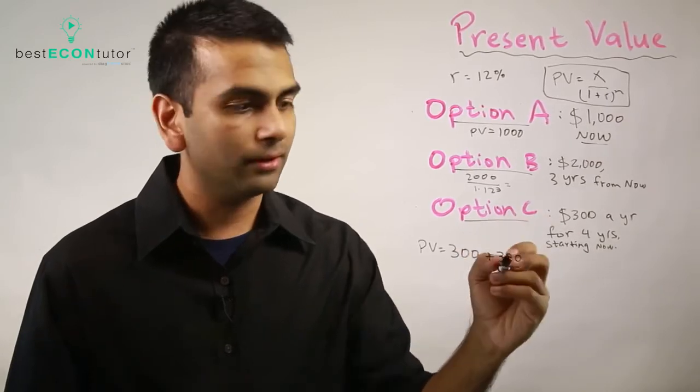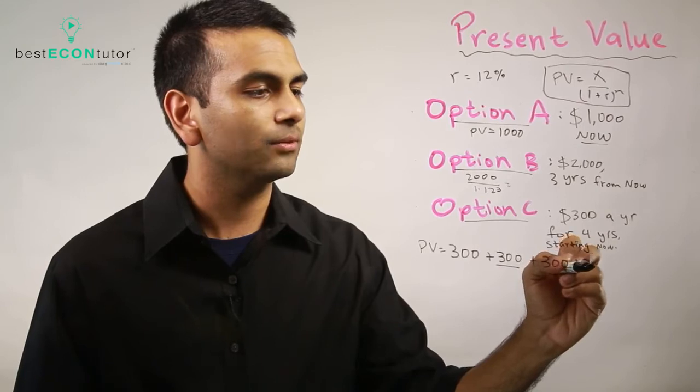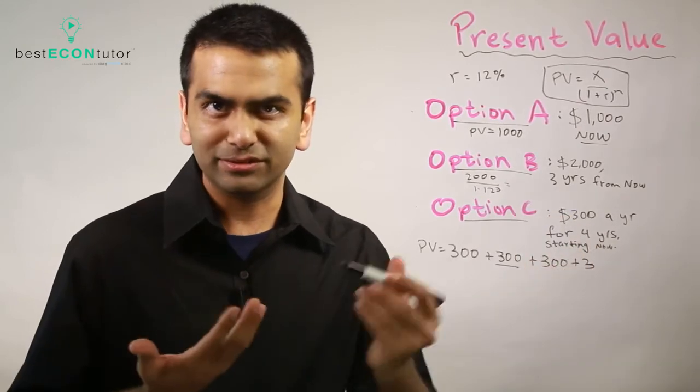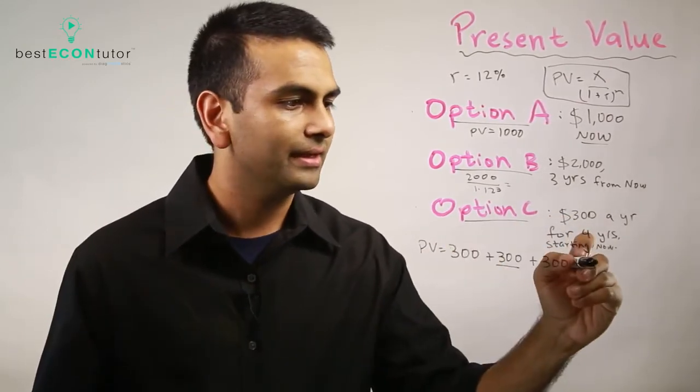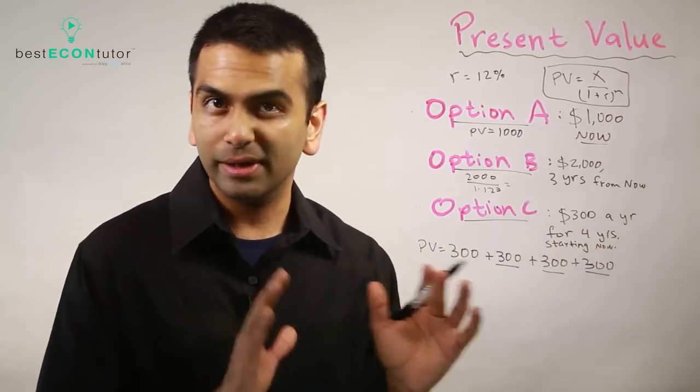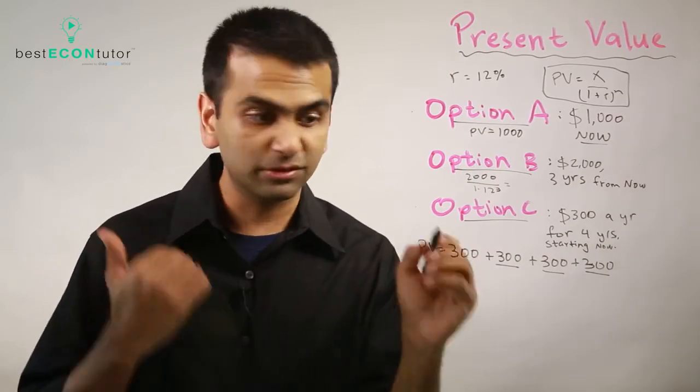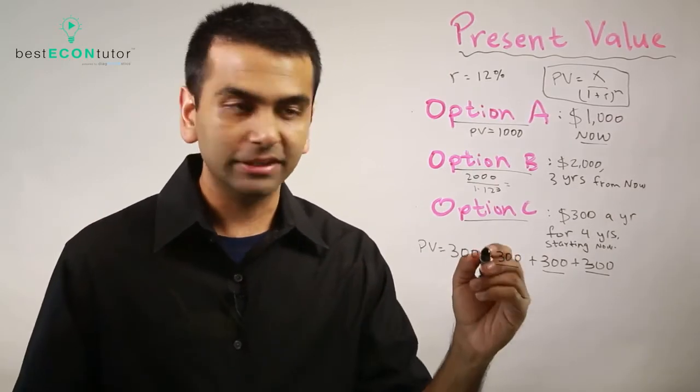But then the three hundred bucks that you get a year from now, here's the thing: at the end of the day your temptation might be to say wait, isn't this just worth twelve hundred bucks? Three hundred a year for four years, so three hundred added four times. But here's the thing: all these three hundred aren't created equally. They're given to you in different time periods.